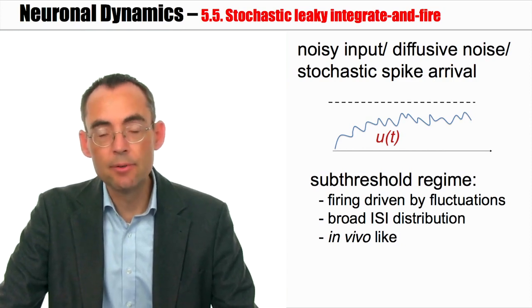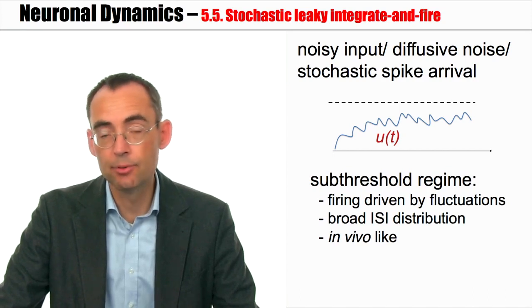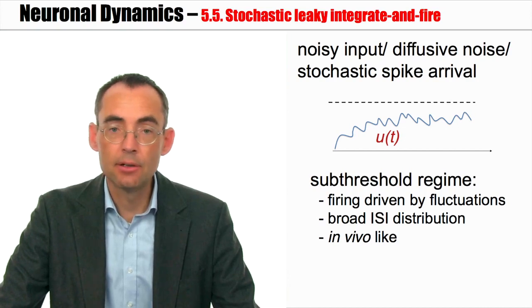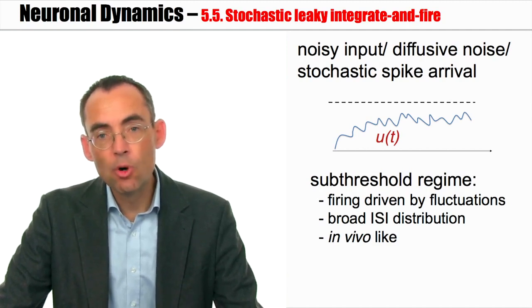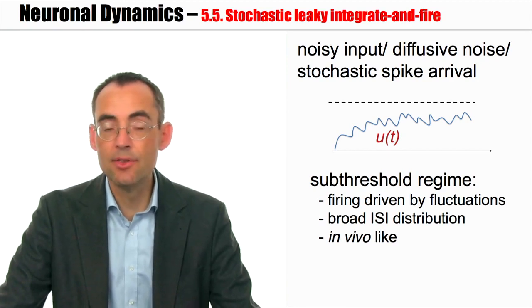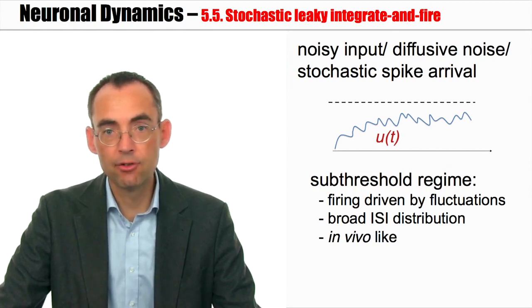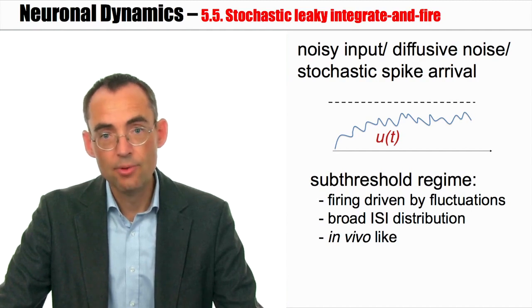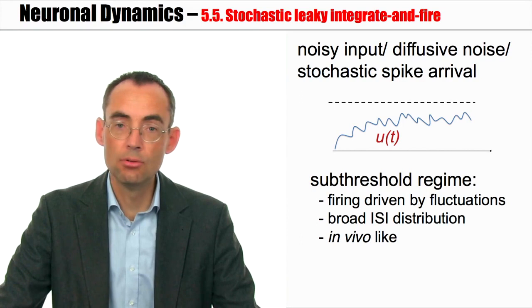To summarize, a leaky integrate-and-fire model driven by a time-dependent input current, where the input current has a mean and a fluctuating part, also called a noisy input part. Such an integrate-and-fire model can be driven in two different regimes. It can be in the superthreshold regime. In this case, the mean input is enough to fire the neuron. The neuron exhibits more or less regular firing. It's nearly periodic with a small jitter. The more interesting regime is the subthreshold regime, because it's in this regime that you see subthreshold membrane potential fluctuations. Spikes are rare events. They are driven by the fluctuations of the membrane potential. In the absence of these fluctuations, the neuron would never fire. Thus, we have identified the subthreshold regime as a particularly interesting regime in relation to in vivo data. Spikes are rare events.